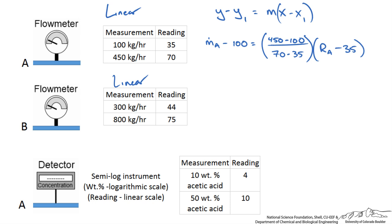When we solve for our reading as a function of the flow rate we should get the following: 0.1 times our mass flow rate plus 25 will give us our reading on the flow meter for stream A.